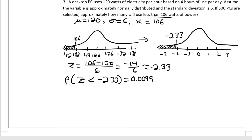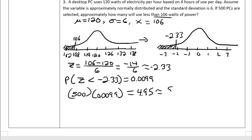Now we multiply that probability by 500 PCs: 500 times 0.0099 equals 4.95, which rounds to approximately 5 PCs. So about 5 PCs on average will use less than 106 watts of power.